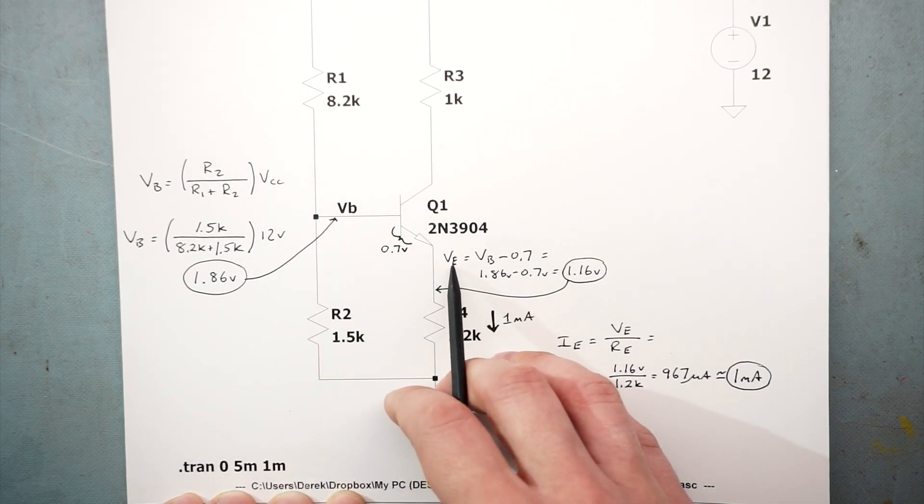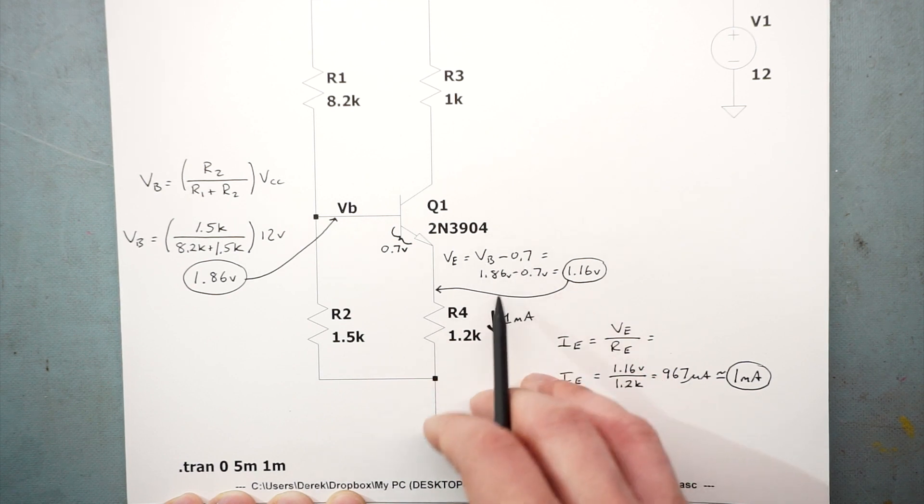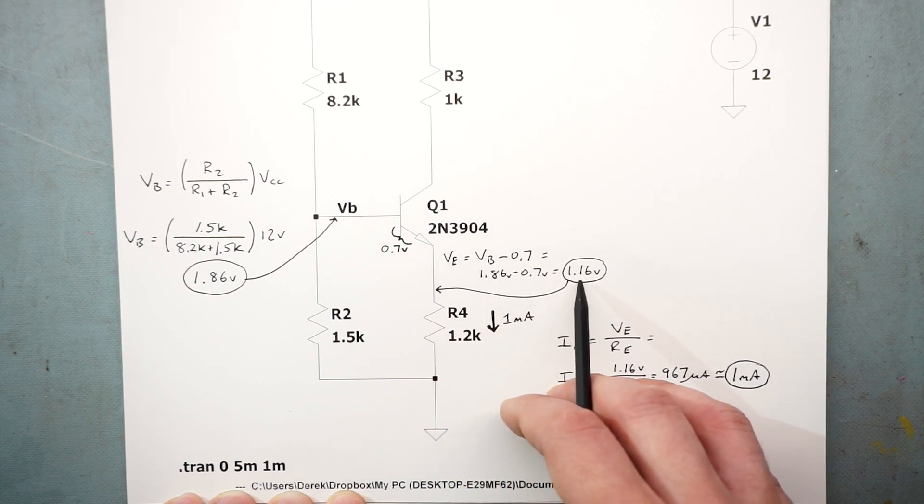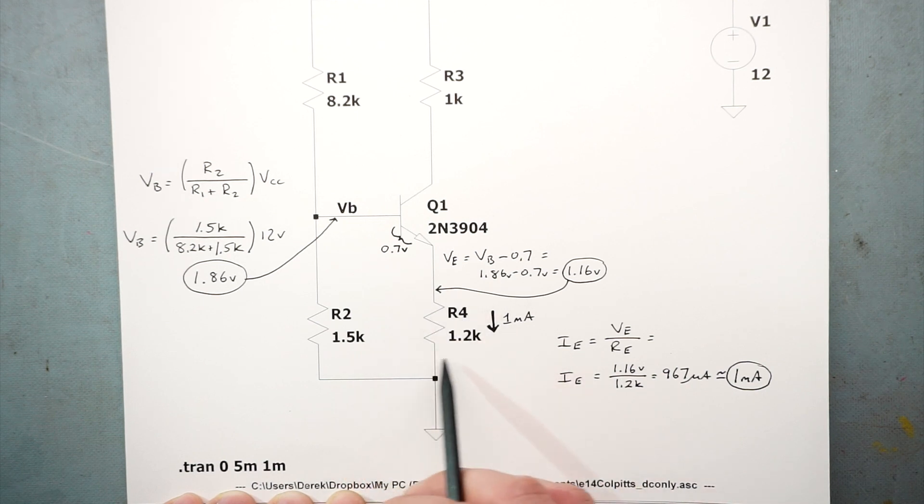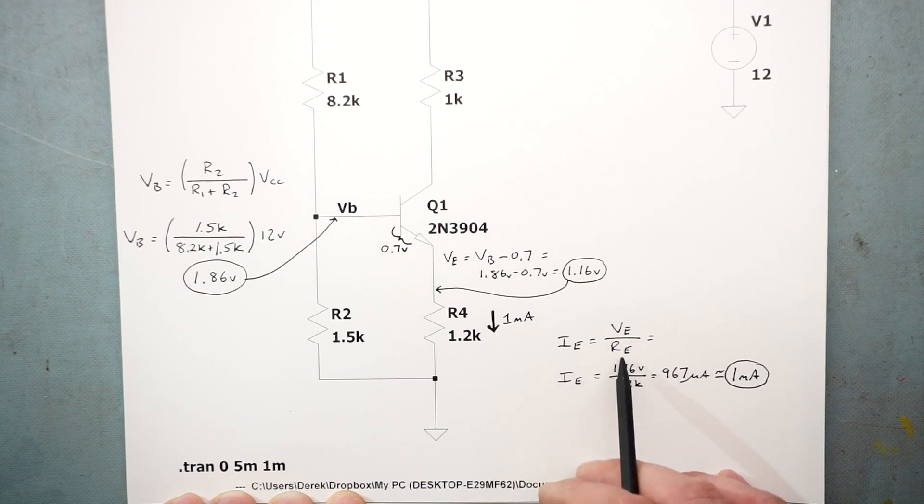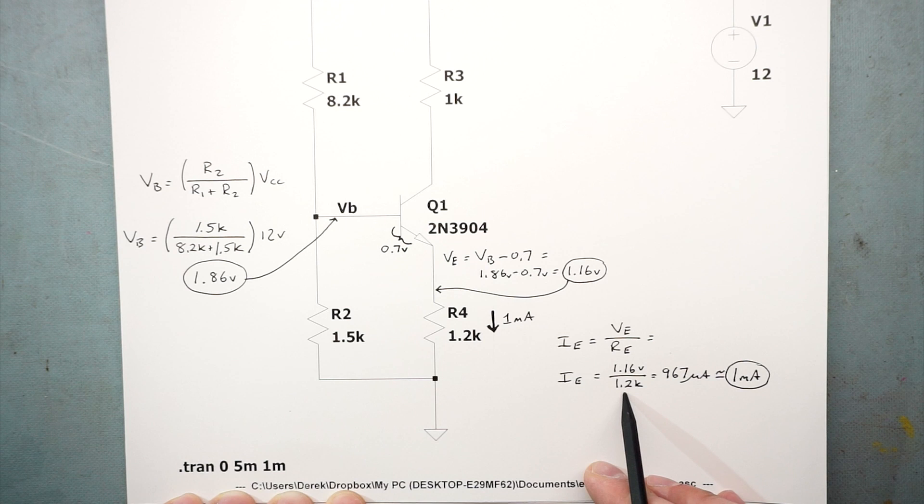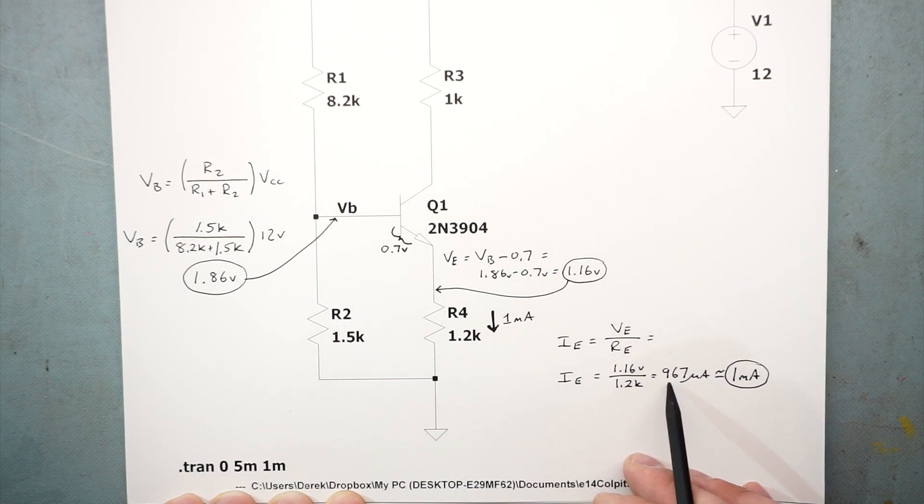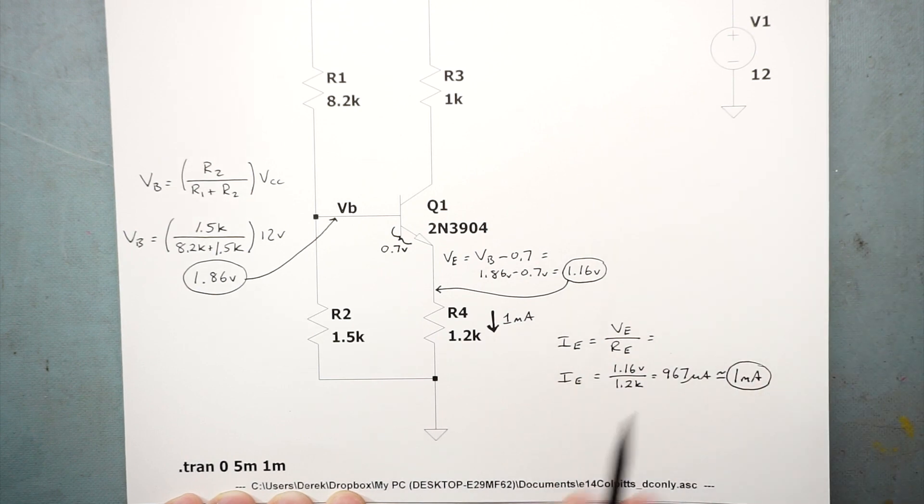That needs to be subtracted from what we calculated for a base voltage. So voltage at the emitter is base voltage minus 0.7 volts. That turns out to be 1.16 volts at the emitter or across the emitter resistor. Using Ohm's law, we can determine the current by saying current at the emitter equals voltage divided by resistance. That becomes 1.16 volts divided by 1.2k ohms and that is 960 microamps. From here on out, I'm going to say that's close enough to 1 milliamp.